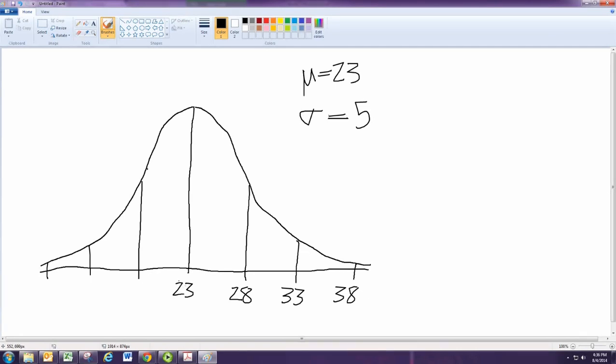Going to the left, we would subtract 5. Subtracting 5 from 23, we get 18. And subtracting 5 again, we get 13. And subtracting 5 again, we get 8.